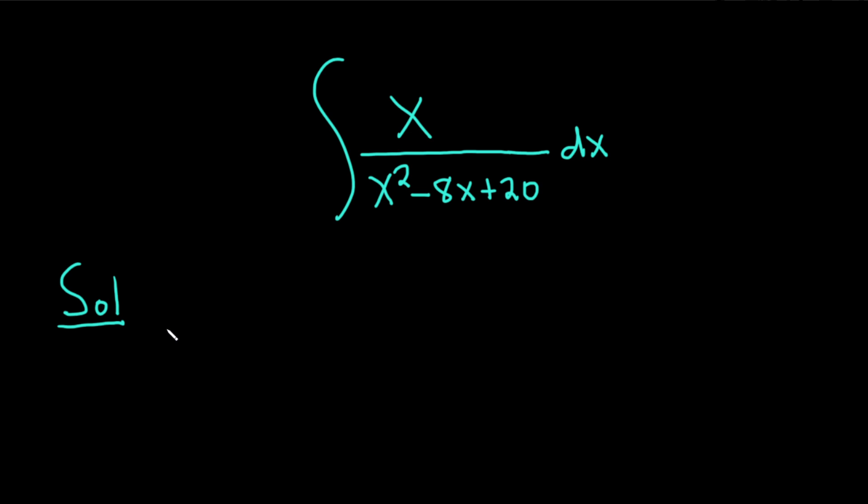Right away the first thing that comes to mind is to make a u substitution. If we let u be what's here on the bottom, we're going to get an x, so let's just see what happens. Let's set u equal to x squared minus 8x plus 20.